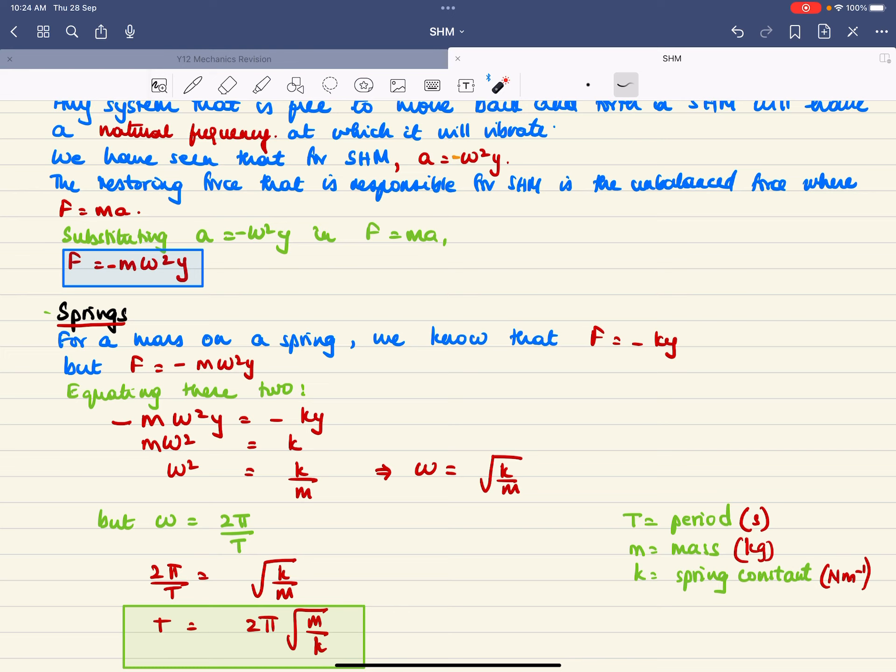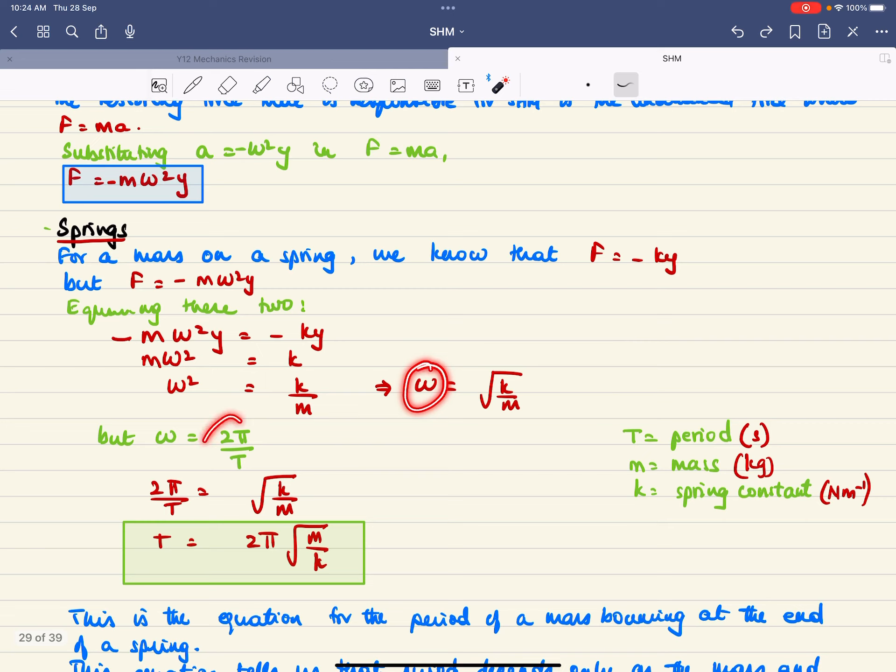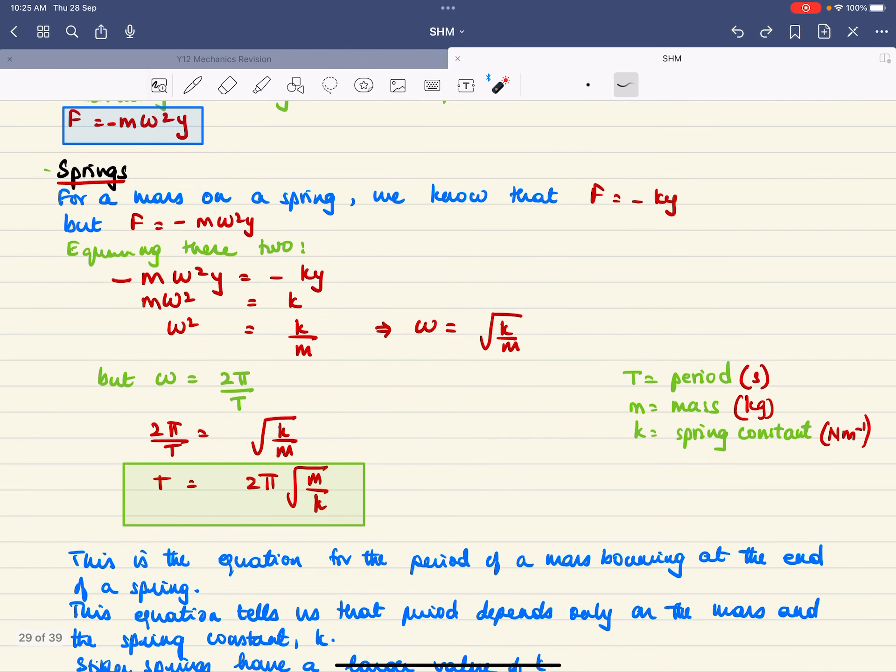For a mass on a spring we know that f is negative ky, but f we just found out is actually m omega squared y. When you equate both these, you end up with m omega squared equals k, or omega squared is k over m, or omega is square root of k over m. We know that omega is 2 pi over t, so 2 pi over t is square root k over m. If you make t the subject of the formula, you have t equals 2 pi square root m over k, where t is the period in seconds, m is the mass in kilograms, and k is the spring constant in newtons per meter.